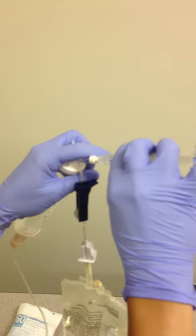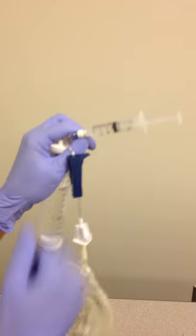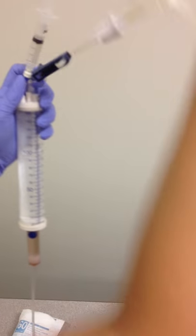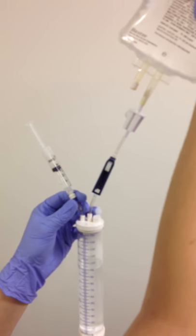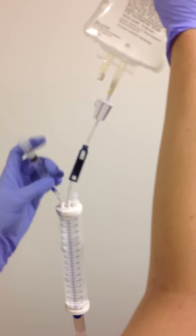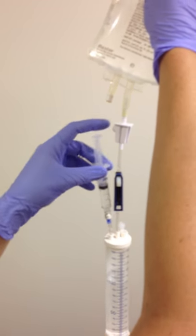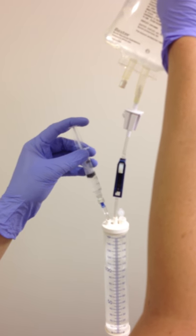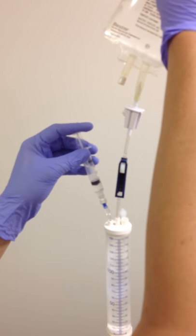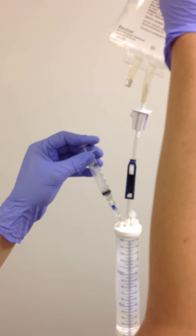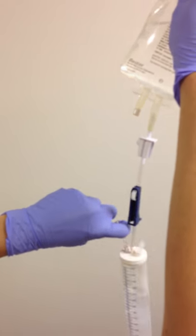We will inject that into our medication port, which is the port beside the D5W thumb wheel. Now inject the three milliliters slowly. Amiodarone tends to bubble up, so we will inject it slowly.